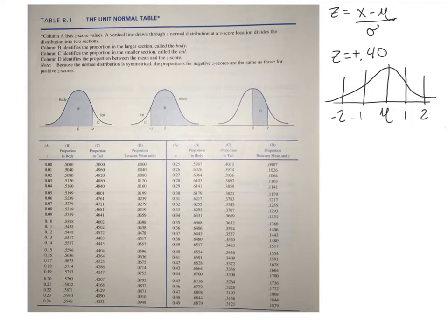This is called a unit normal table and it's to work with z-scores. You're going to have several of these tables throughout the semester. This is the first one and this is the one that's going to work with your z-scores.